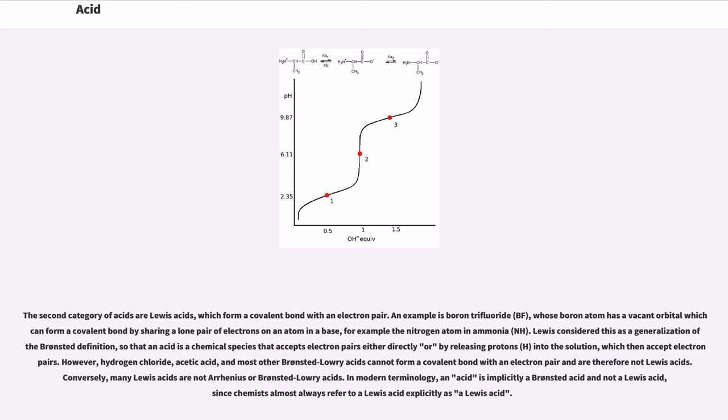However, hydrogen chloride, acetic acid, and most other Brønsted-Lowry acids cannot form a covalent bond with an electron pair and are therefore not Lewis acids. Conversely, many Lewis acids are not Arrhenius or Brønsted-Lowry acids. In modern terminology, an acid is implicitly a Brønsted acid and not a Lewis acid, since chemists almost always refer to a Lewis acid explicitly as a Lewis acid.